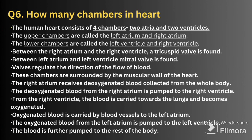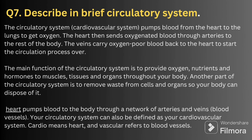The next question is: how many chambers are there in the heart? The human heart consists of four chambers — two atria and two ventricles. The upper chambers are called the left atrium and the right atrium. The lower chambers are called the left ventricle and right ventricle. Between the right atrium and right ventricle, a tricuspid valve is present; between the left atrium and left ventricle, the mitral valve is found. Valves regulate the direction of blood flow.